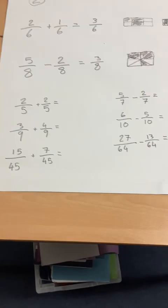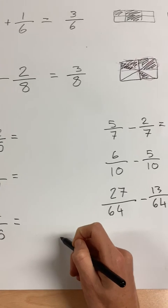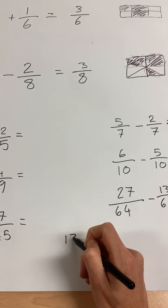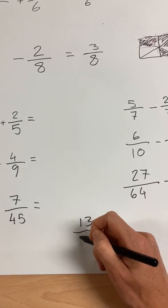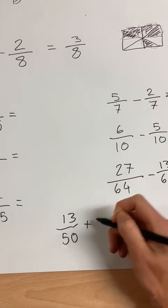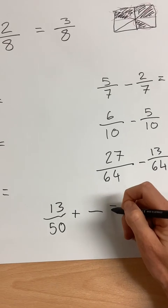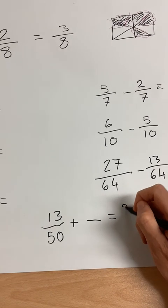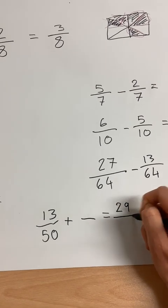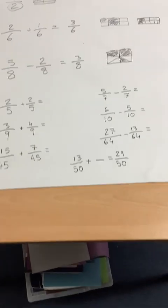I'm going to give you a mastery challenge one now. Thirteen fifty-fifths plus something equals twenty-nine fifty-fifths. So what is the missing fraction there?